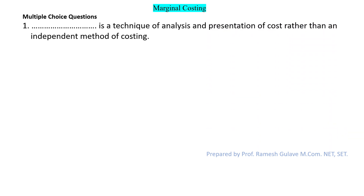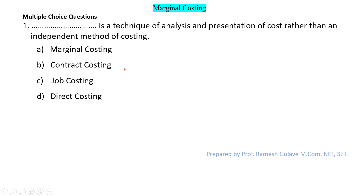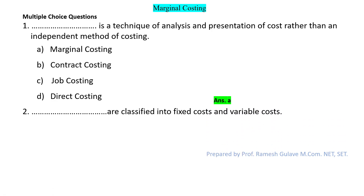The first question says: dash is a technique of analysis and presentation of cost rather than an independent method of costing. Options are marginal costing, contract costing, job costing, and direct costing. Marginal costing is a technique of analysis and presentation of cost, whereas contract costing and job costing are methods of costing. So option A — marginal costing — is the right answer.